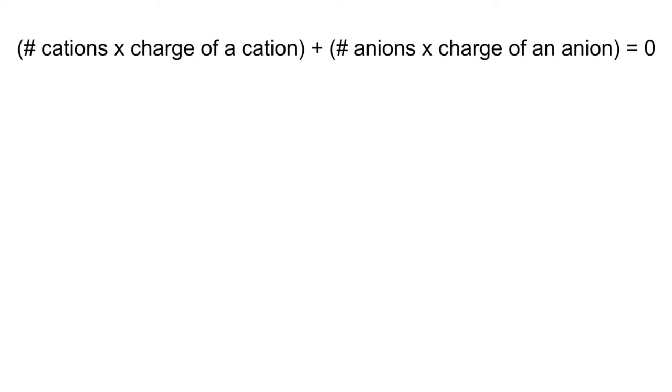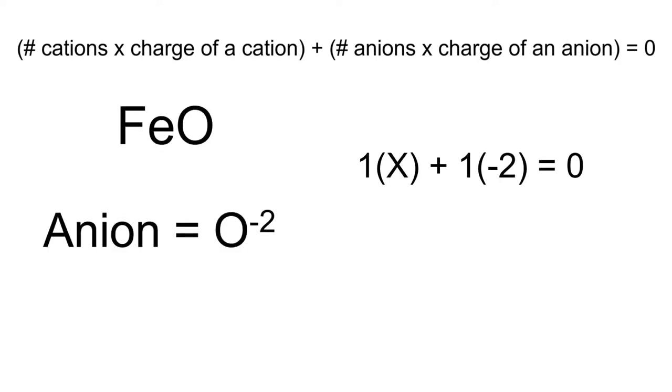To determine the charge on our transition metal, let's use the formula. The number of cation atoms times the charge of a cation plus the number of anion atoms times the charge of an anion equals zero. Using the given information, we can set up the equation to look like this: 1 iron atom times x, since we don't know the charge on the iron, plus 1 oxygen times the charge of a single oxygen minus 2 must equal zero.